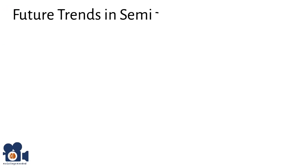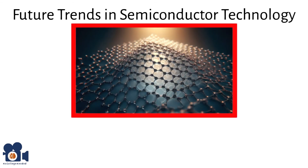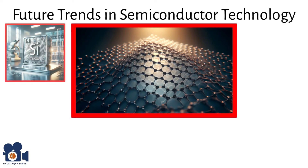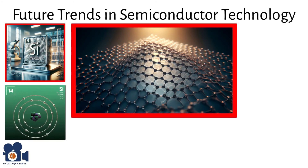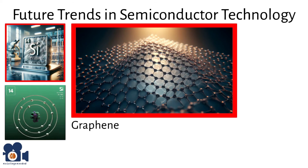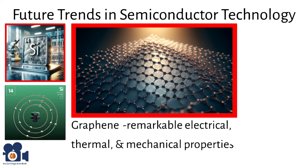The future of semiconductor technology is marked by exciting advancements and significant challenges. As traditional silicon-based technology approaches its physical limits, researchers and engineers are exploring new materials and innovative techniques to continue the trend of miniaturization and performance improvement. One of the most promising new materials is graphene, a single layer of carbon atoms arranged in a hexagonal lattice. Graphene boasts remarkable electrical, thermal, and mechanical properties, including high electron mobility, which allows for faster electron transport compared to silicon.